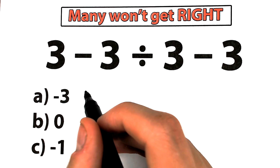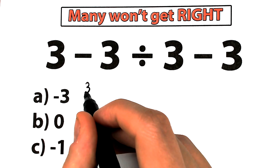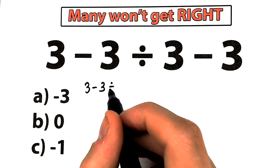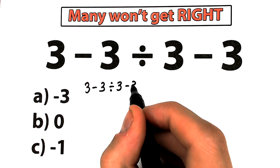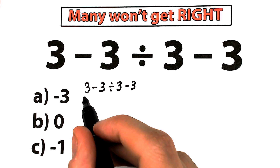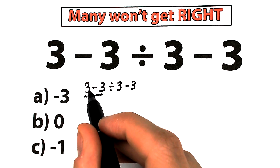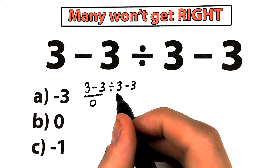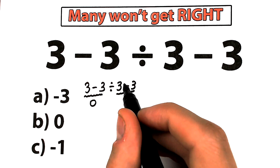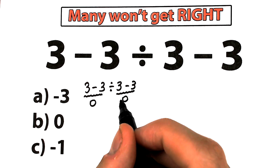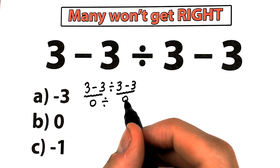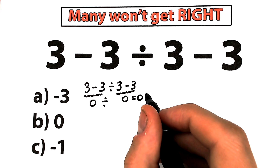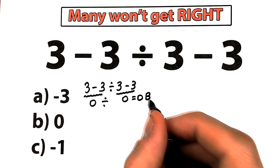So the first part of students solve this question like this: we have 3 minus 3 divided by 3 minus 3. One part of students say that we can start from this subtraction — so we have 3 minus 3 on the left-hand side, which equals 0, and 3 minus 3 on the right-hand side, which also equals 0, so 0 divided by 0 equals 0. That part of students say that 0 is the correct answer.